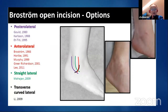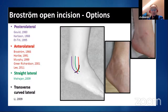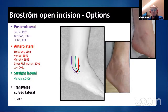Regarding the incision, there are many varieties. There is the posterolateral incision popularized by Glue and Calcane, and also the anterolateral incision in the Leed color popularized by Brostrom, Holme, and Murphy. The straight lateral over the fibula is like Mahajan's approach. And also the transverse curved lateral in the Leid color, the Langer's line, popularized by Lig.